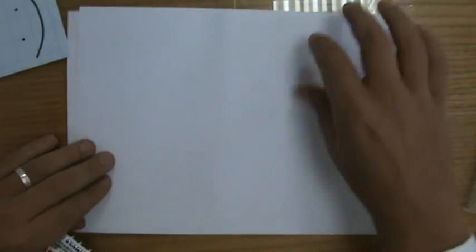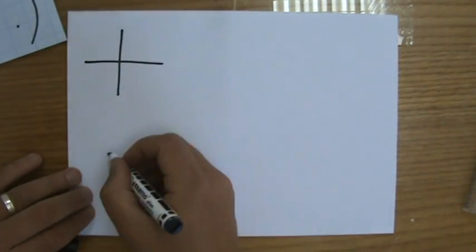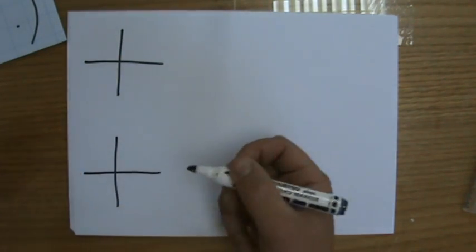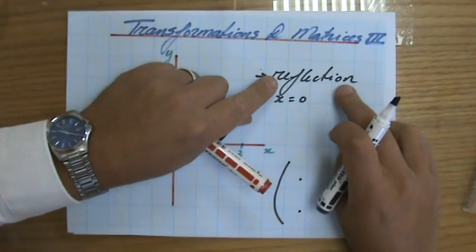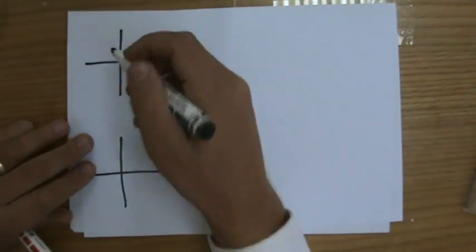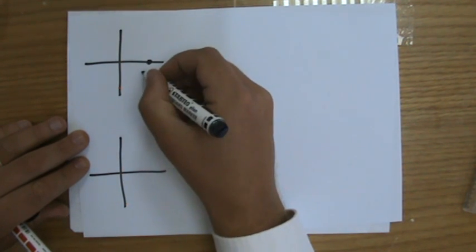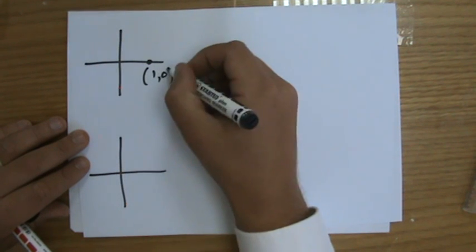This is how you are going to do it. You're going to evaluate for two particular points. Just to sketch, you're going to evaluate for two points what happens to those points after a reflection in the y-axis.